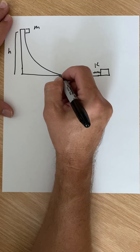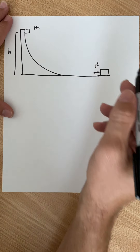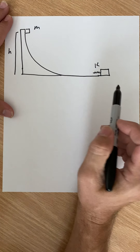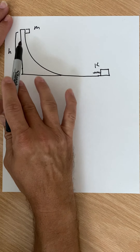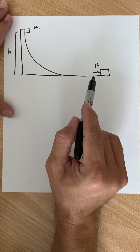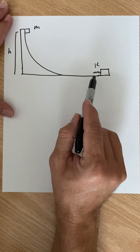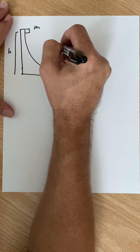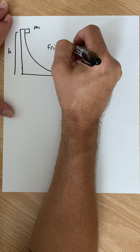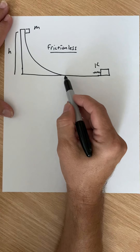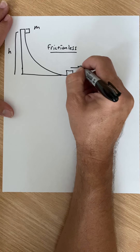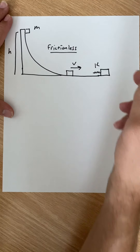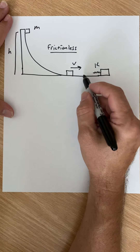This is the fourth example problem in our conservation of energy examples. We have an interesting situation. I'm still sliding something down a ramp, although in this case the ramp is curved. I also have added a spring. The situation is I have a mass that's going to slide down a frictionless ramp, eventually end up at the bottom with some velocity, and then compress the spring.